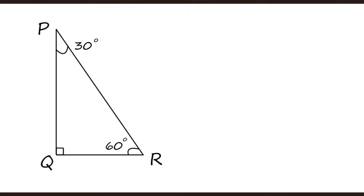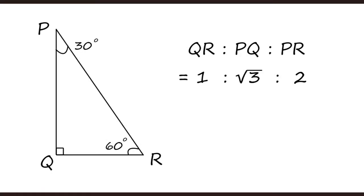In a 30-60-90 triangle, the angles are 30°, 60°, and 90°. The ratio of the sides opposite these angles is 1 : √3 : 2. So the side opposite 30° is 1, the side opposite 60° is √3, and the side opposite 90° is 2.